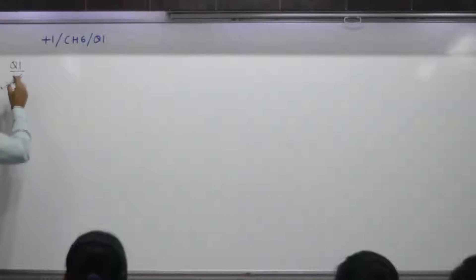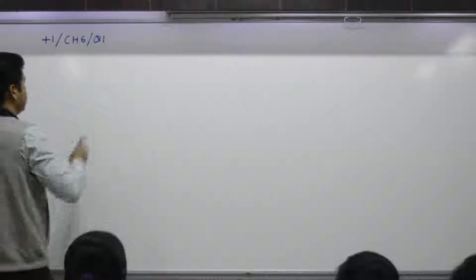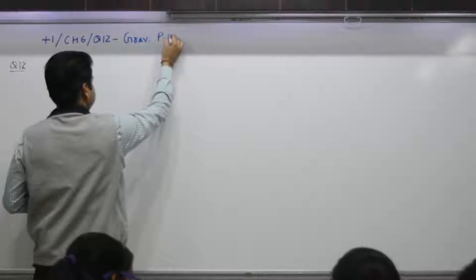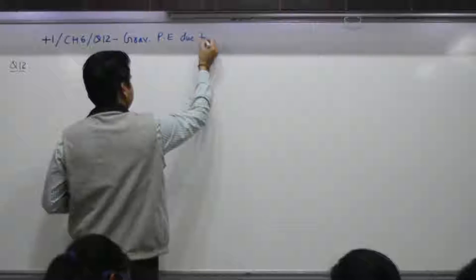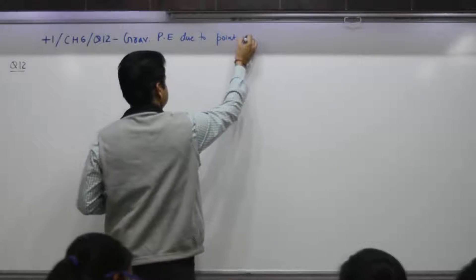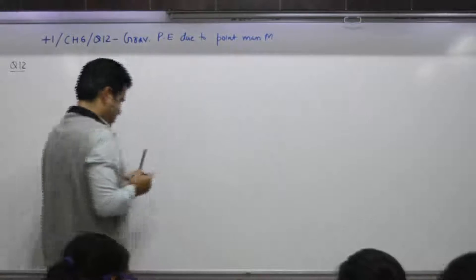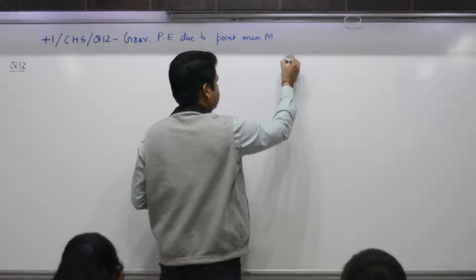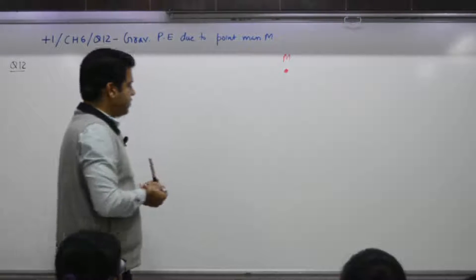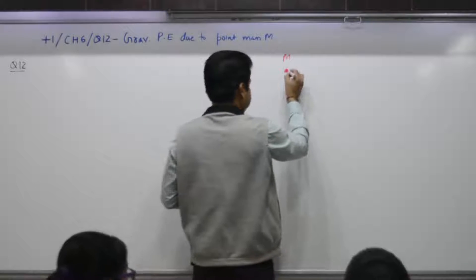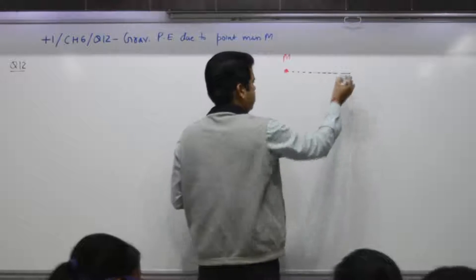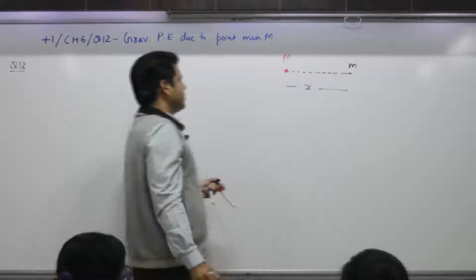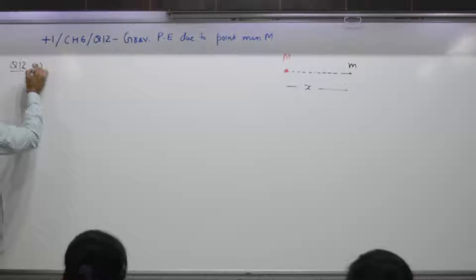Question number 12 is gravitational potential energy due to a point mass, capital M. You have a point mass M and you want to find the potential energy. Another mass is small m, and the distance between the two is x.